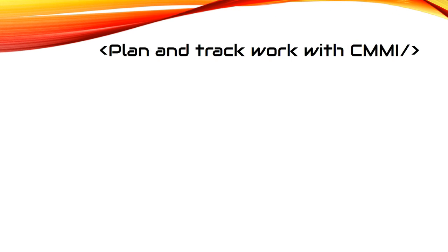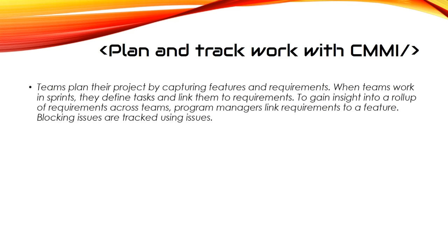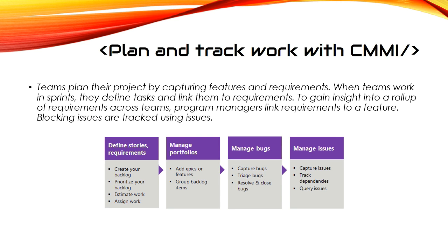To plan and track work with CMMI, teams plan their project by capturing features and requirements. When teams work in sprints, they define tasks and link them to requirements. To gain insight into a rollup of requirements across teams, program managers link requirements to features. Blocking issues are tracked using Issues. You define your stories and requirements, then create your backlog, prioritize it, estimate your work, and assign your work.